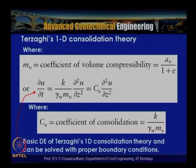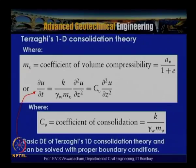If permeability k is high, cv will be high and the time rate of settlement will be very high. If k is low — such as for marine clay, where k is on the order of 10⁻⁹ to 10⁻¹⁰ m/s — then cv will be very low and consolidation will take a long time.